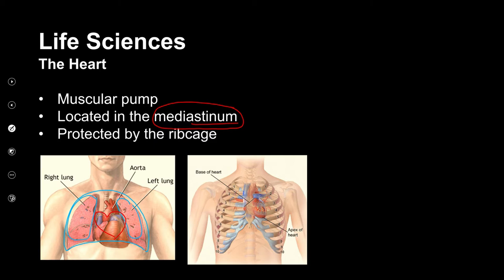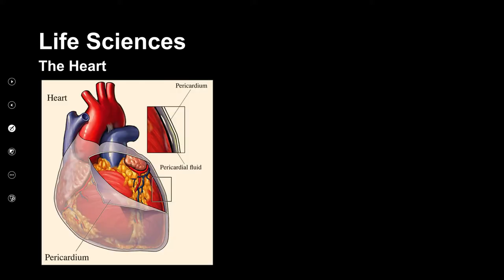Our lungs and our heart are really important. So we need protection. We've got the structure called the rib cage, and the rib cage is made up of bones, and in between the bones are muscles — intercostal muscles. They're going to cover the heart and cover the lungs and they're going to be protected. This rib cage is also going to need to allow the lungs to be able to breathe, so we're going to be protected by the rib cage.